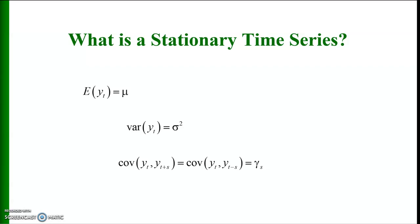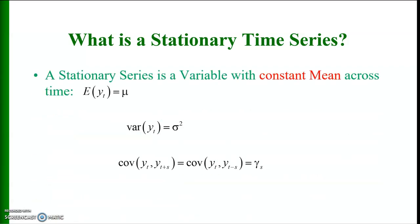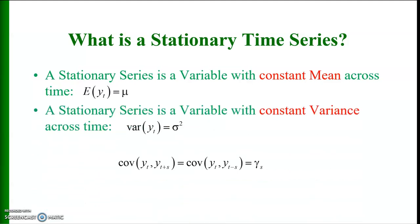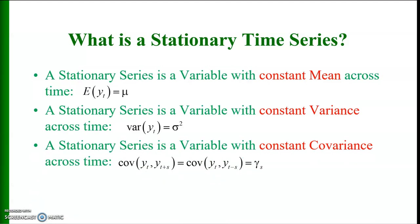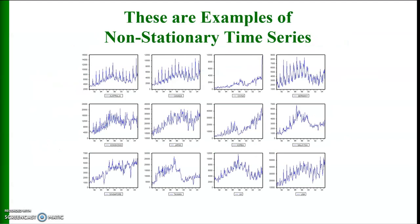A stationary time series is a variable with a constant mean over time, that is the expected value of yt equals mu. It is also a variable with a constant variance across time, meaning the variance of yt equals sigma squared. Thirdly, it has a constant covariance across time, where the covariance of yt and yt+1 equals the covariance of yt and yt-1, which equals gamma s — so the covariance depends on the length of time between t and s.